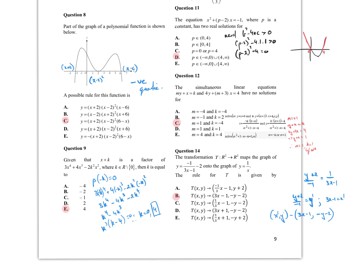Part of the polynomial function is shown below — a possible rule for this function. I've listed the possible factors; now it's a negative quartic, so there has to be a negative sign somewhere. In the way it's been written, there's my negative of 6 minus x, which I could write as negative x minus 6. That's this last factor, so C is the correct response.